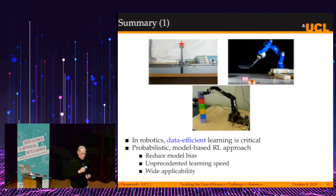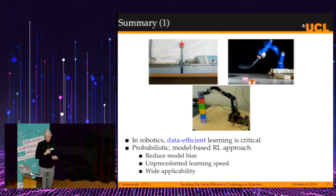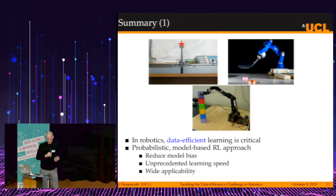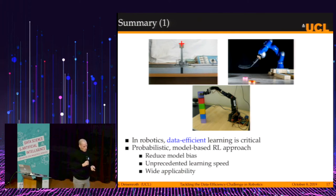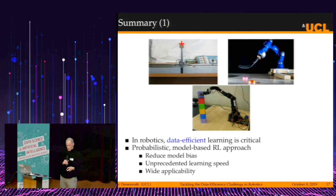The point is that in robotics, data-efficient learning is very important. I introduced a probabilistic model-based reinforcement learning approach which allows us to reduce model bias, achieves an unprecedented learning speed, and is widely applicable to a range of different robotic systems.